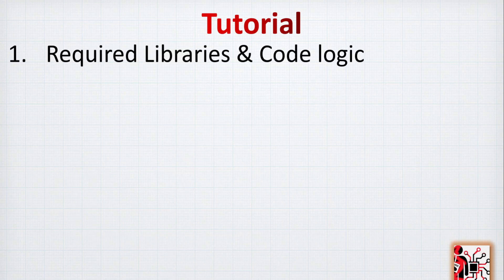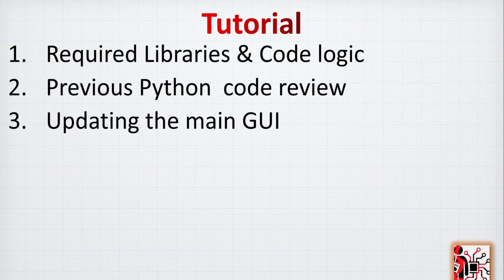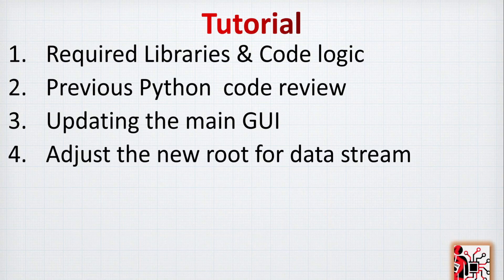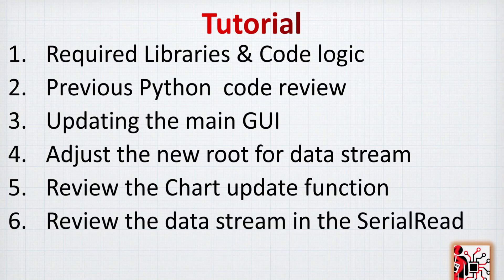For the tutorial, first we will see the required libraries for Python and a code logic overview. After that, we will review the previous Python code so you understand what we have been doing and what we are going to build on top of it. Then we will update the main GUI, adjust the new route which manages the GUI or data stream, review the chart update function, and finally review the data stream in the serial data thread which is one of the main threads updating the data.